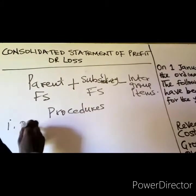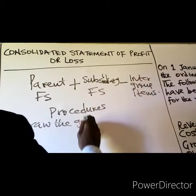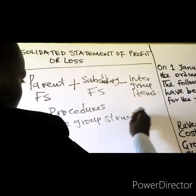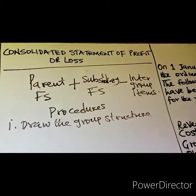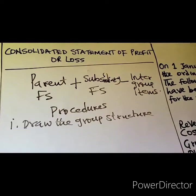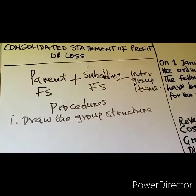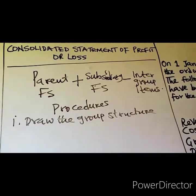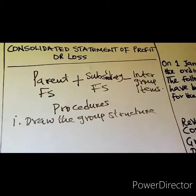Step number one is to draw the group structure. You want to know the relationship between the members of the group. Remember, you don't consolidate the associate — you only calculate the share of associate profit. You don't consolidate associates in the consolidated financial statements.